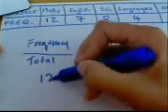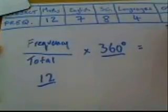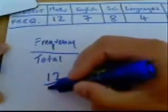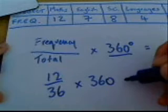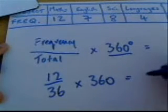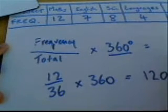So, frequency for maths was 12, total was 36 multiplied by 360 equals 120 degrees.